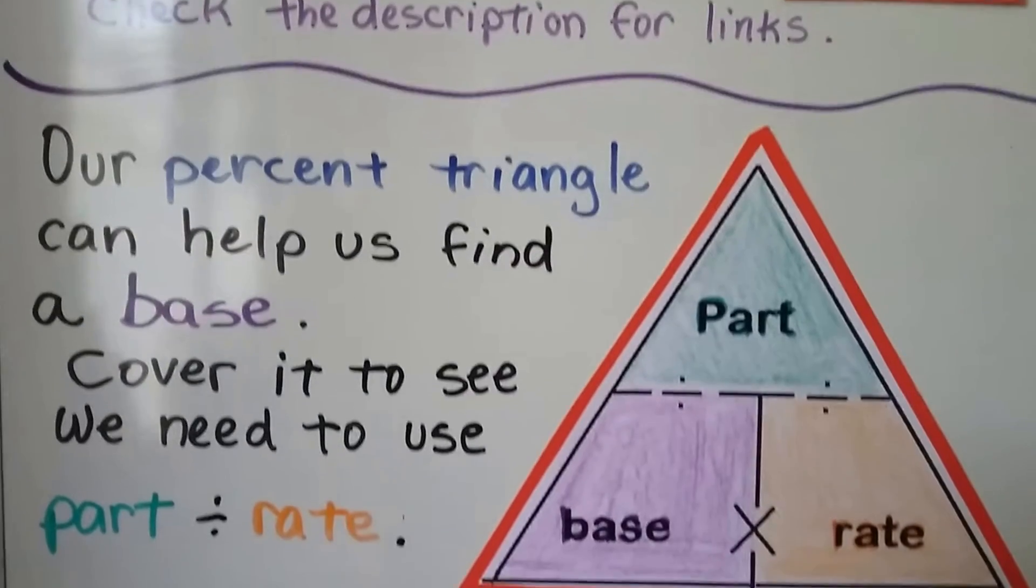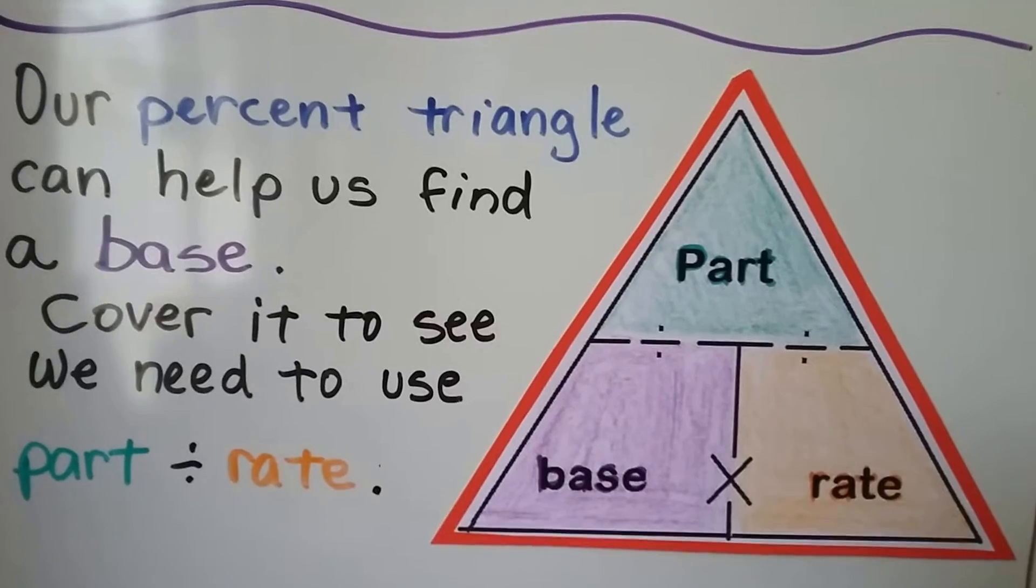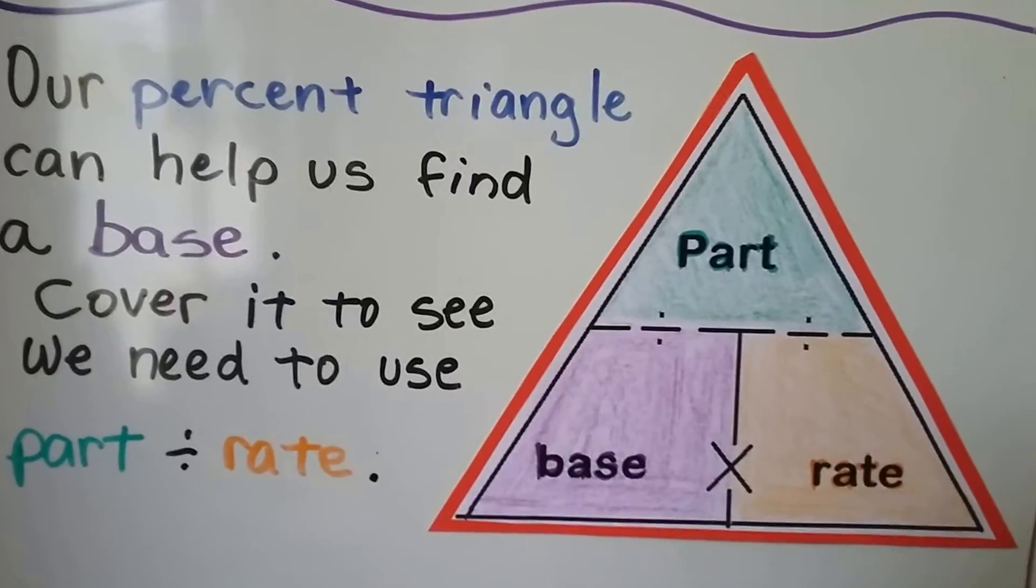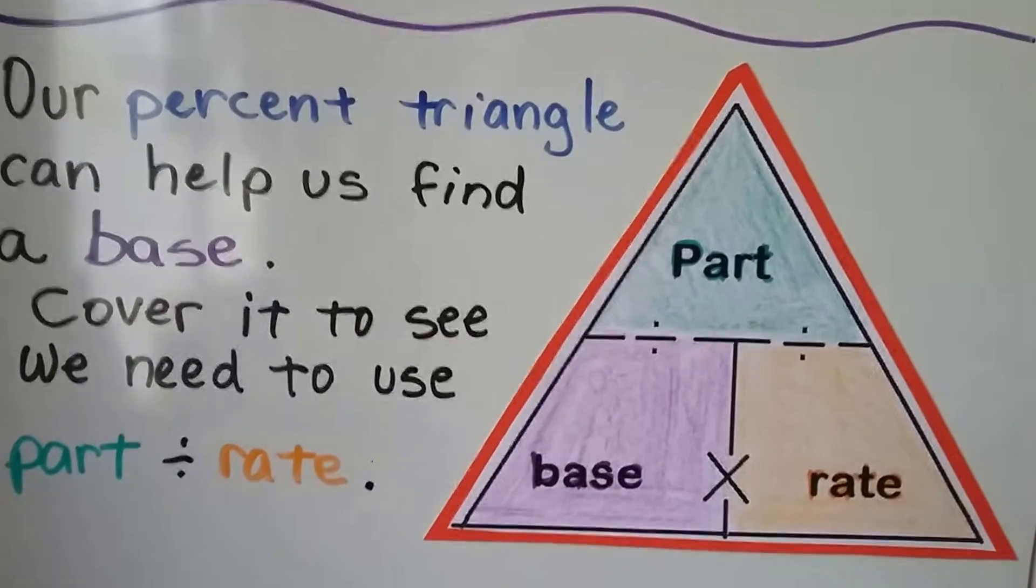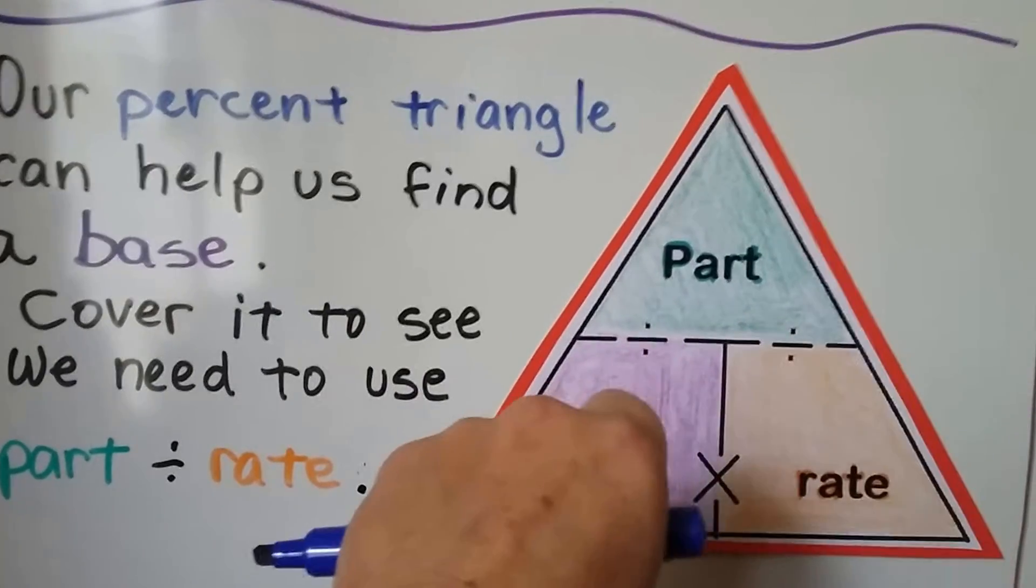This is the triangle we used in all the lesson 12 videos. Our percent triangle can help us find a base. We just cover it to see what we need to use. Whatever is missing, that's the part we cover. So we can do part divided by rate.